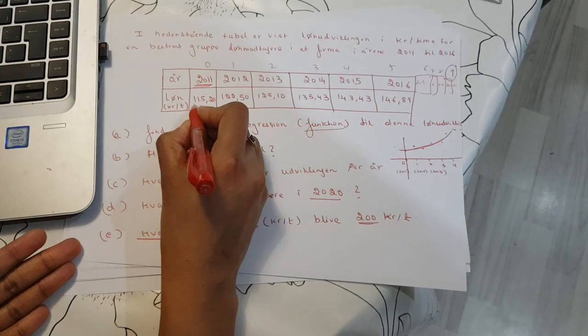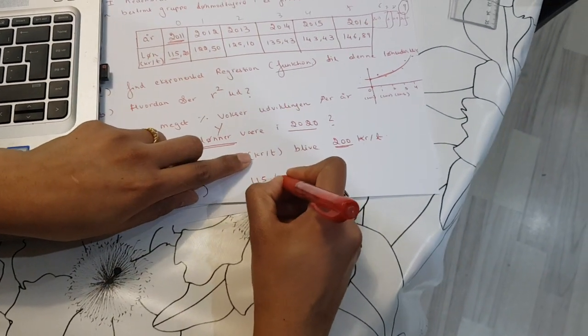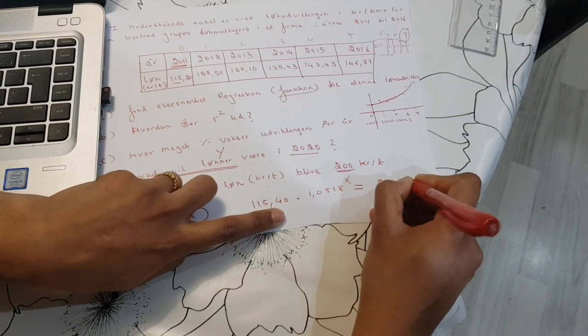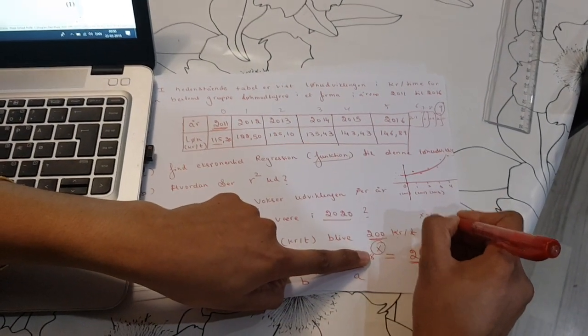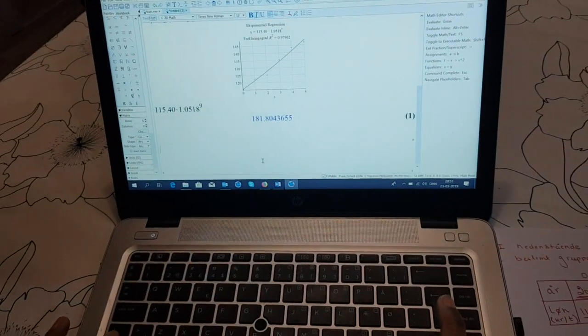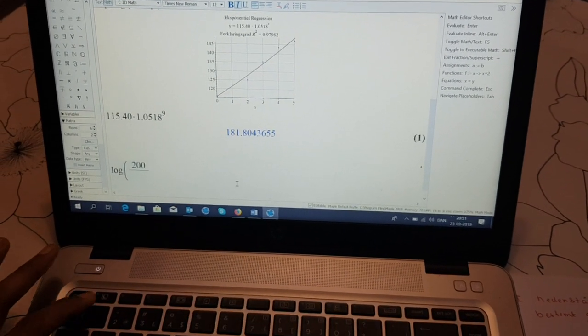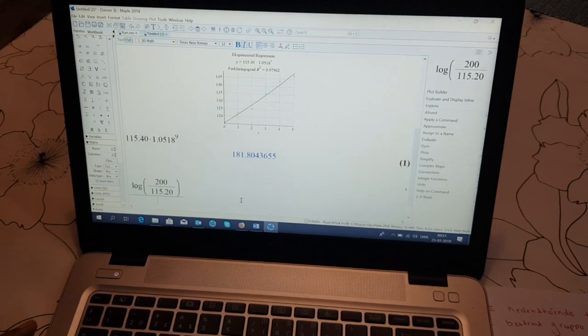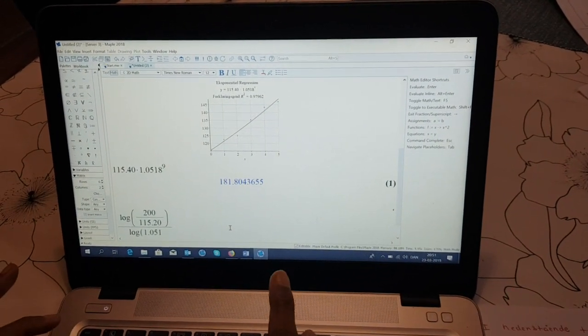It's okay, easy. If we look at our function, I want to find when 115.4 times 1.05 to the x equals 200. So I have B, I have A and I have Y. And we will find x, okay? Remember our formula. x is like log of y divided by A, all divided by log of B. So I will simply set in my formula.